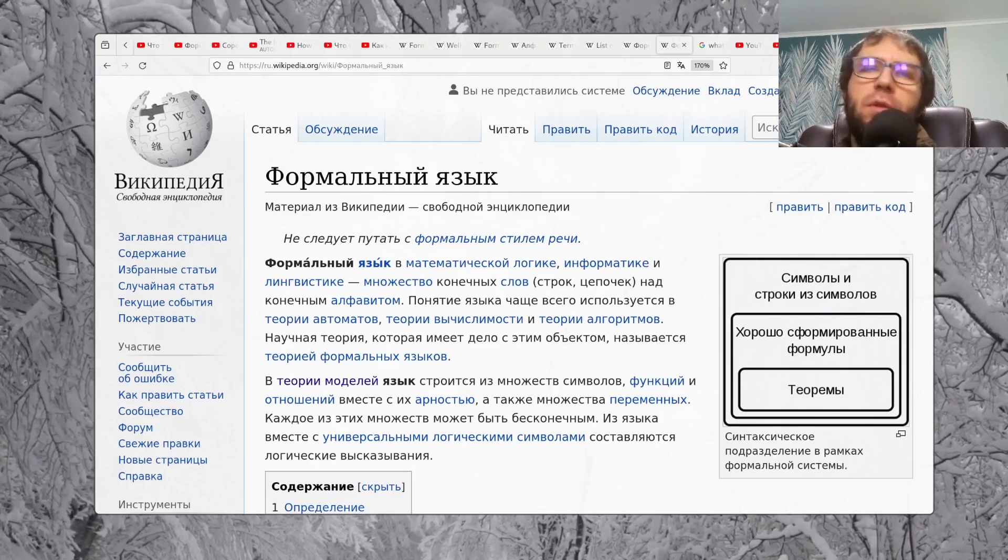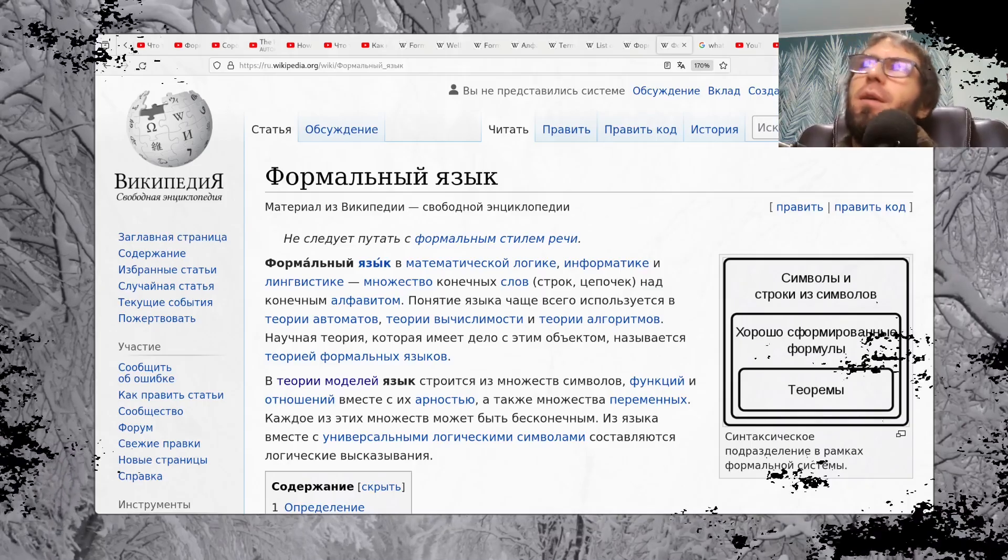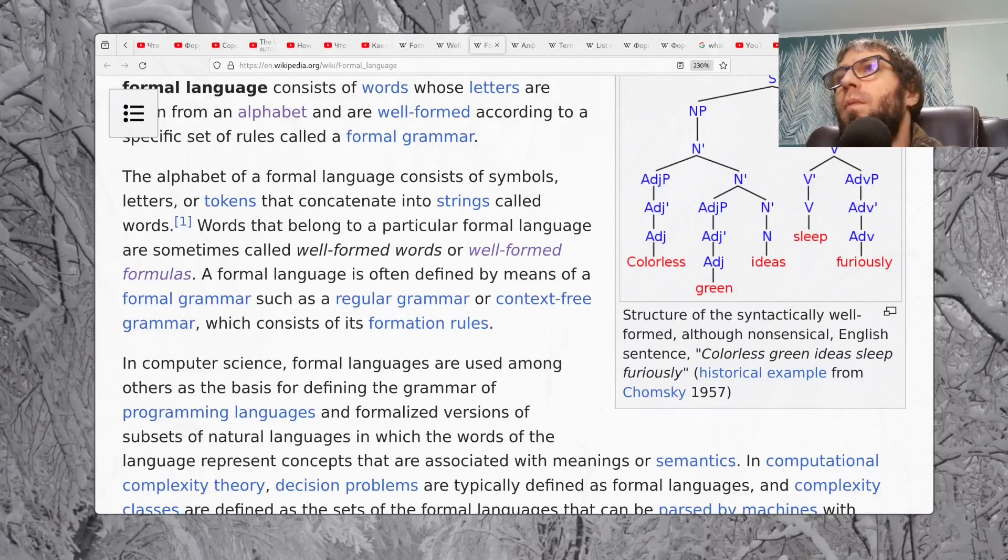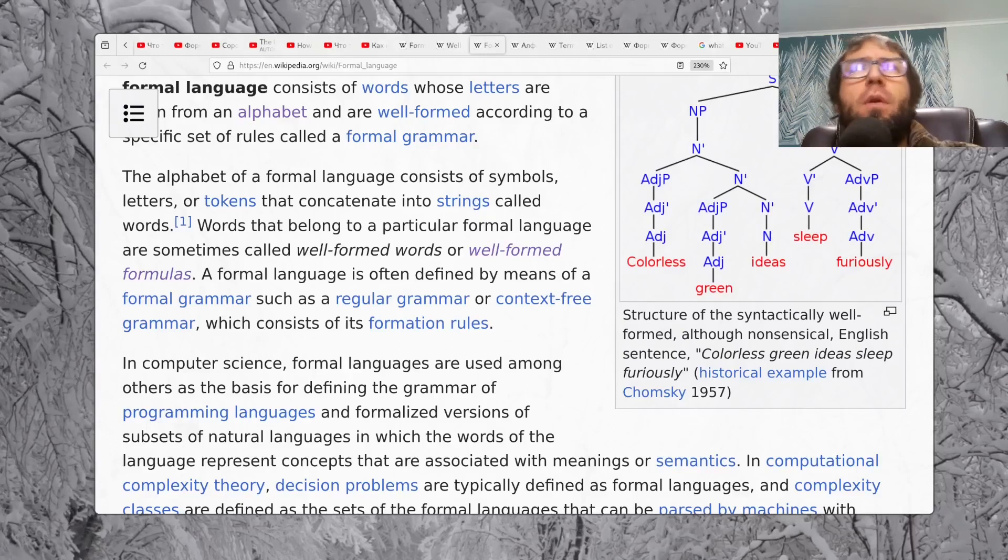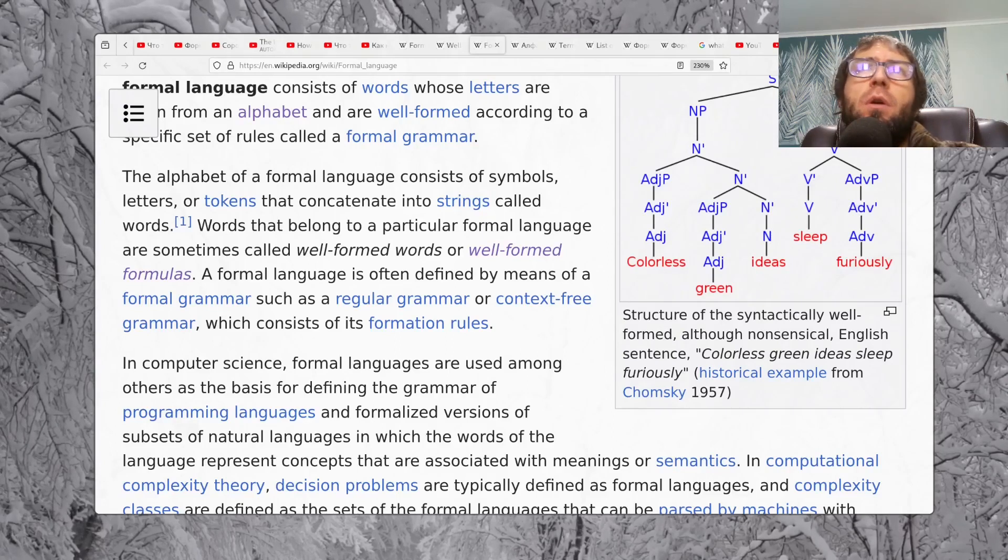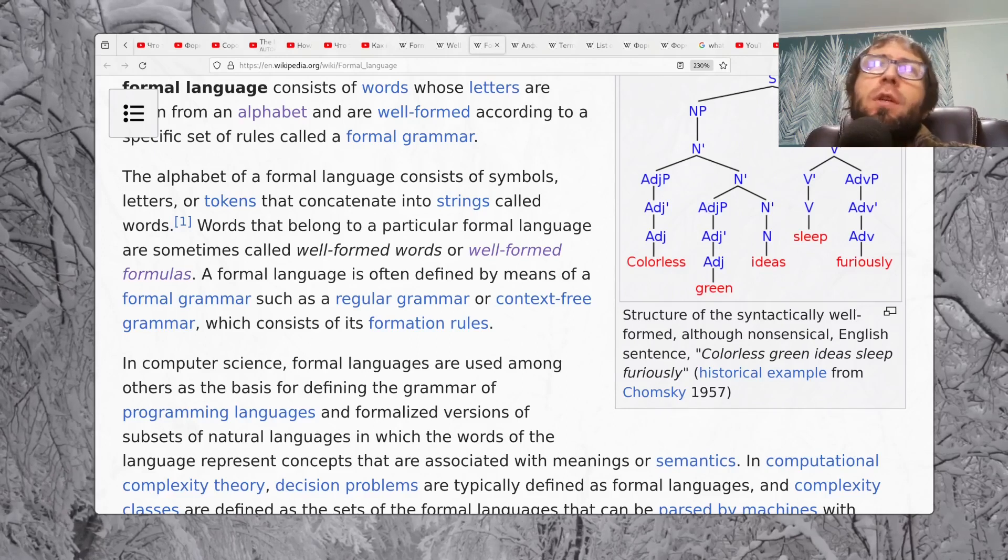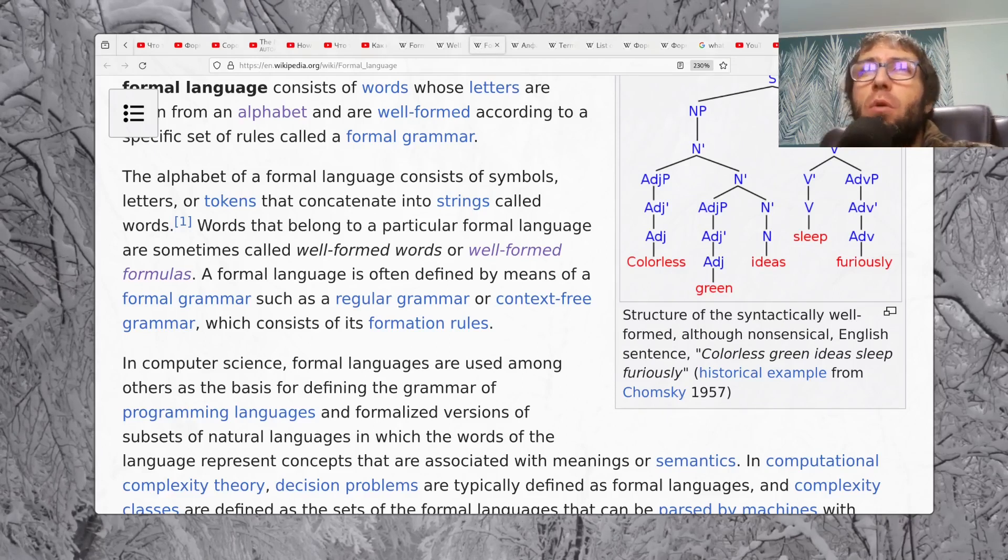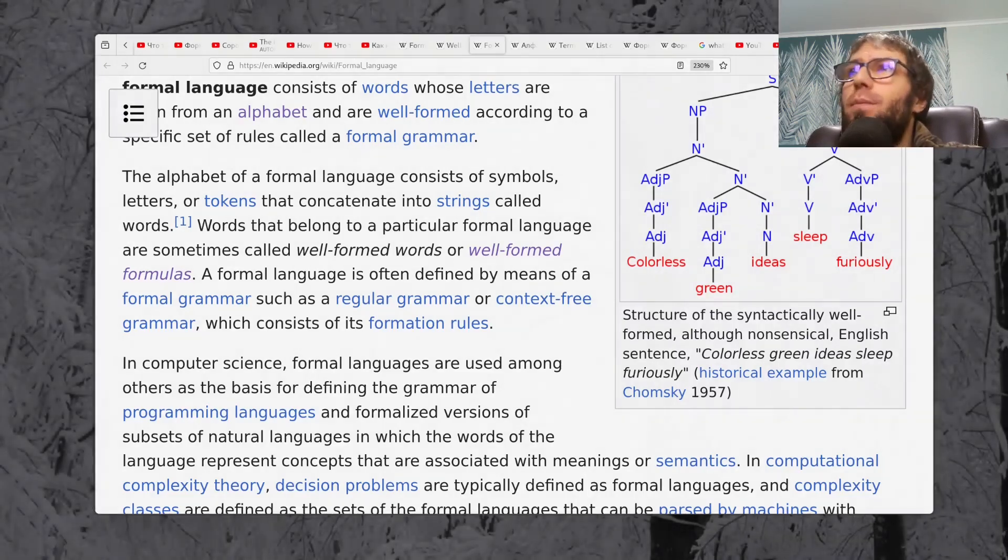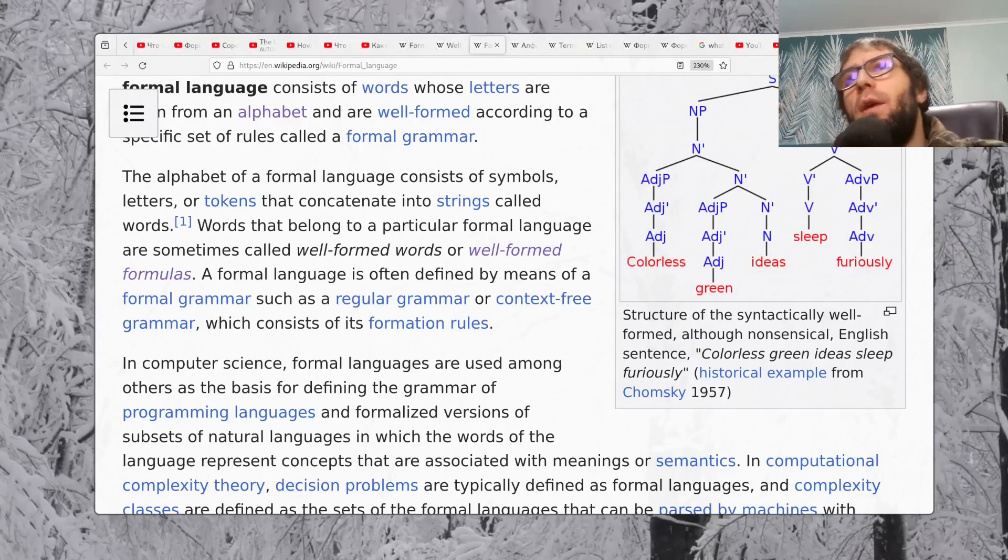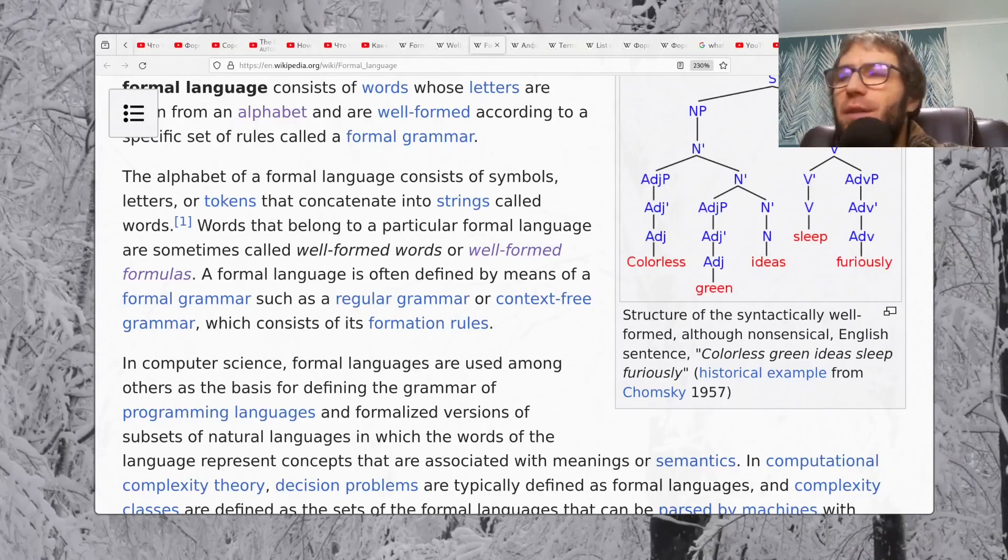So actually this is just some set of words constructed from the symbols. If we review some concrete formal language with words, these words are called well-formed words or well-formed formulas of this language. In other words, these are the words which belong to this concrete formal language.